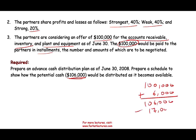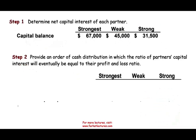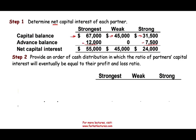Following step one, we determine the net capital interest. Strongest has a capital balance of $67,000 but has a loan from the partnership of $12,000, so his net capital is $55,000. Strong has a loan of $7,500, reducing his capital from $31,500 to $24,000. Weak has no loan, so her balance remains $45,000. Our net capital balances are: Strongest $55,000, Weak $45,000, and Strong $24,000.